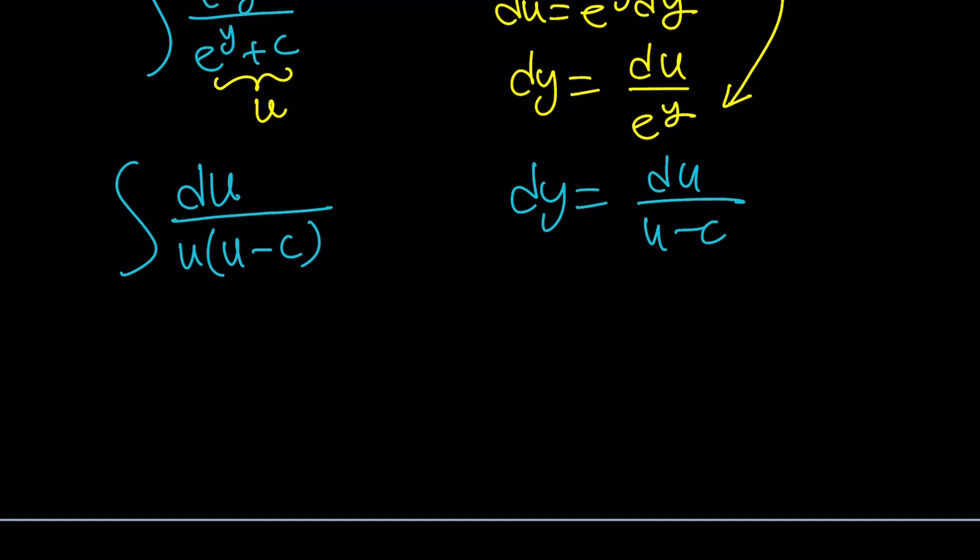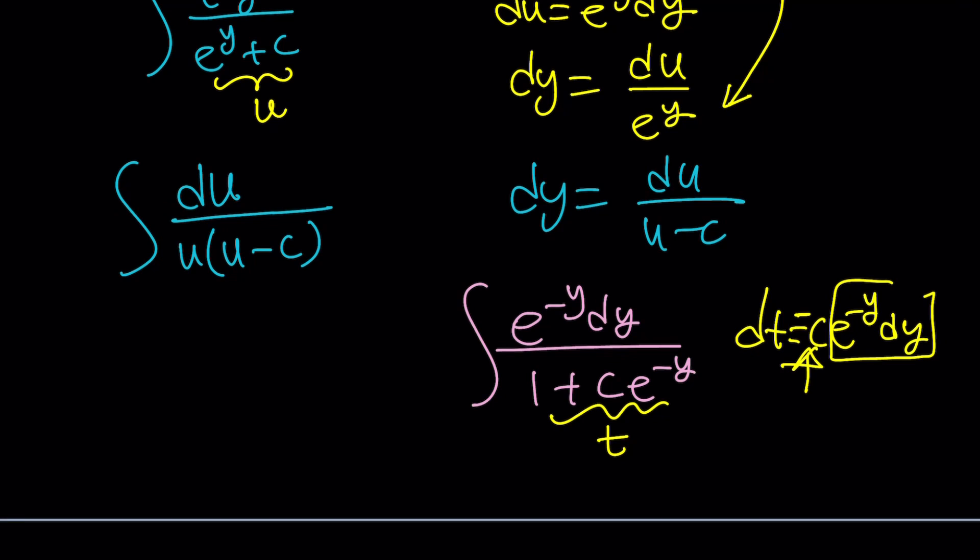Obviously, there's an alternative. I mean, if you don't like this, you can also go by the following. Multiply the top and the bottom by e to the power negative y. That's going to give you the following. And then you can use substitution one more time. But this time, you can go ahead and call this something like t. When you differentiate, dt is going to be c e to the negative y dy with a minus sign. You can definitely do that, but I really like the other method. So let's go with that.